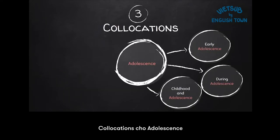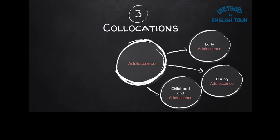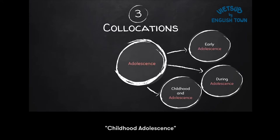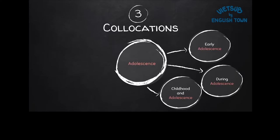Collocations for adolescence: we have early adolescence — like 13, 14, 15 years old — during adolescence, and childhood and adolescence. Adolescence is a good comparison word for childhood. You have childhood, adolescence, adulthood.